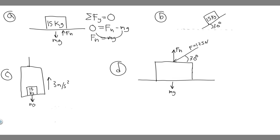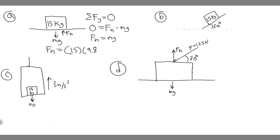All we did was move mg to the other side. The normal force equals mg, so we plug in: mass is 15, multiplied by g which is 9.8. Fifteen times 9.8 gives us 147. So for Part A, the normal force F sub n is 147 newtons.